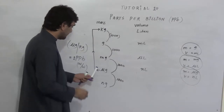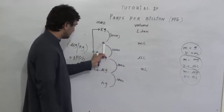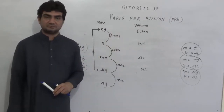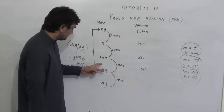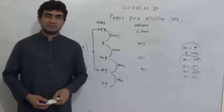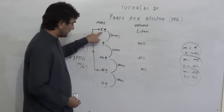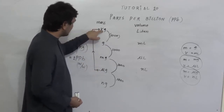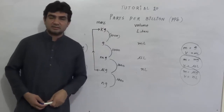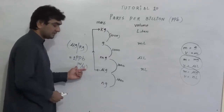Why? Because microgram to milligram is a factor of 1000, milligram to gram is 1000, and gram to kilogram is 1000. So collectively it becomes 10 raised to the power of 9, which is 1 billion. Therefore, 1 microgram is the billionth part of 1 kilogram. So if the concentration of solute is in micrograms and the solution mass is in kilograms, then the number of micrograms per kilogram of solution is the number of parts per billion.